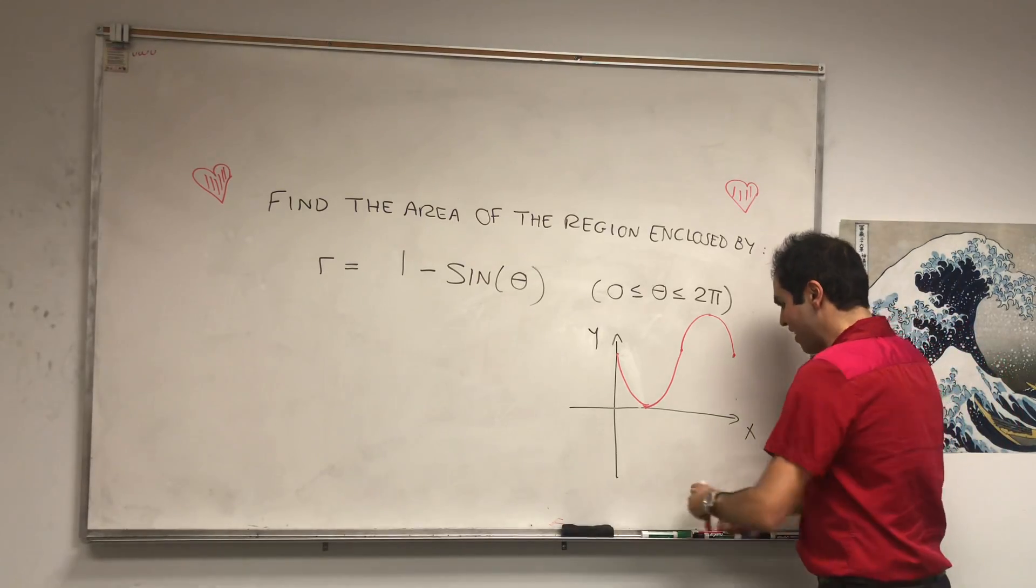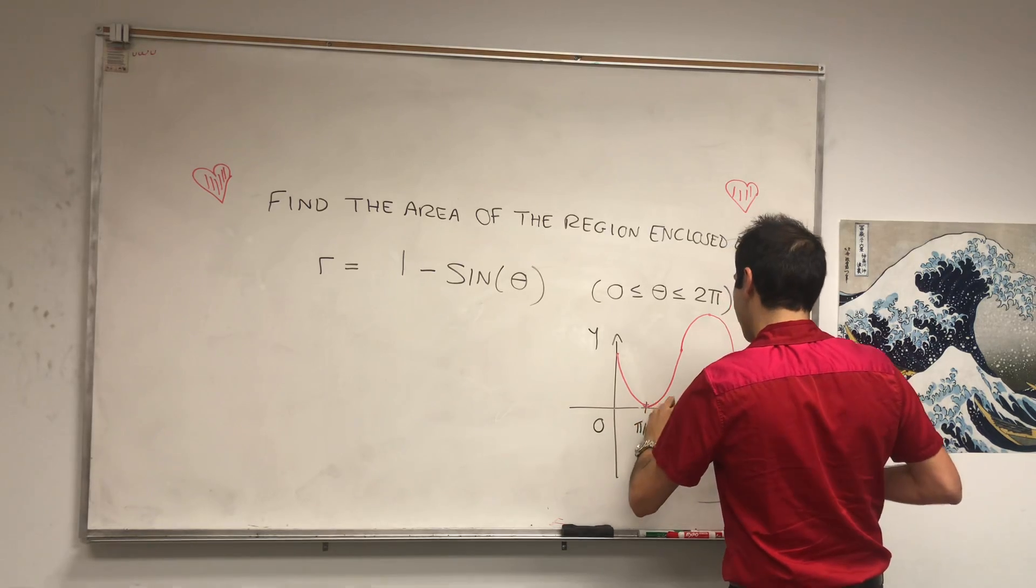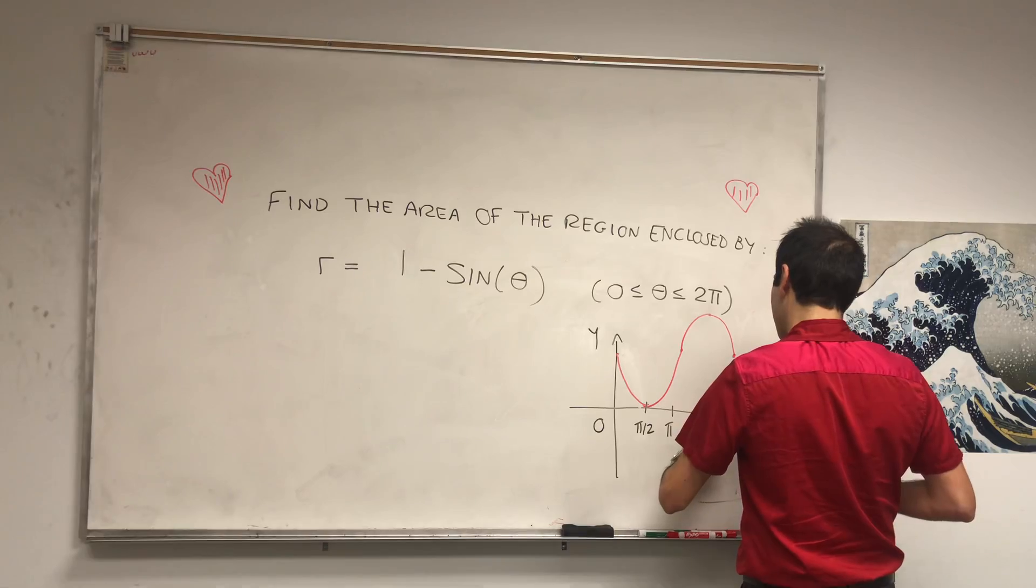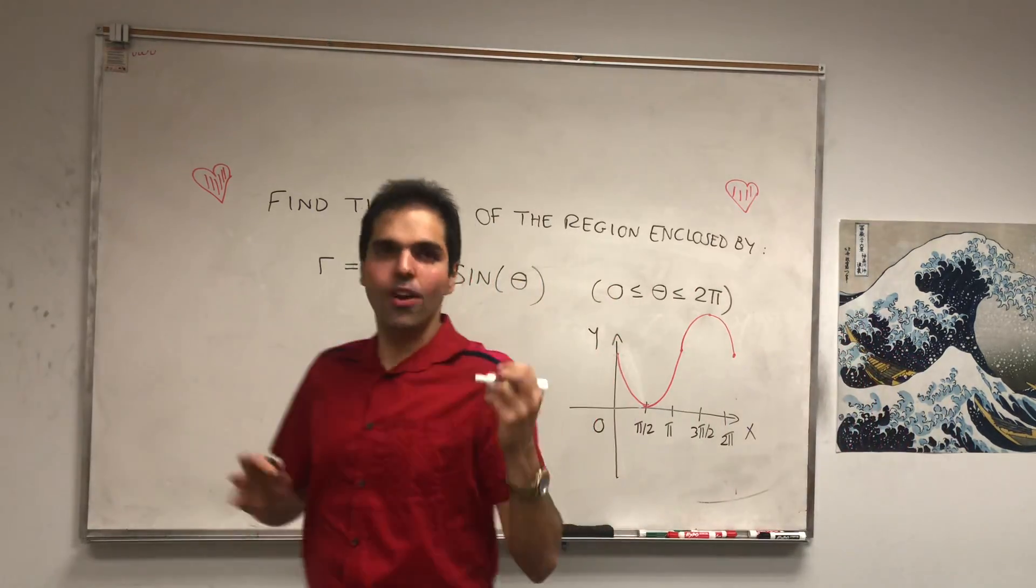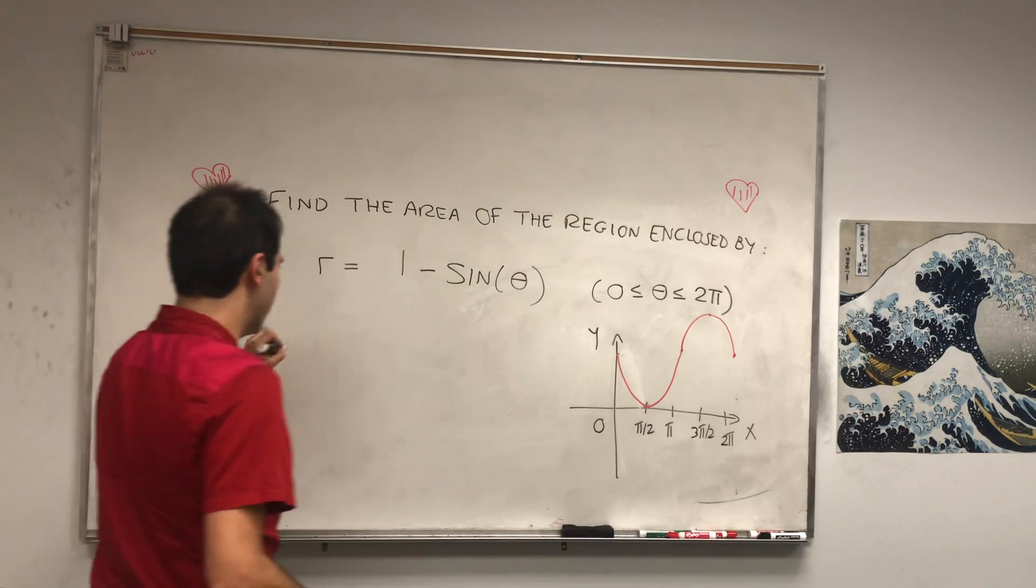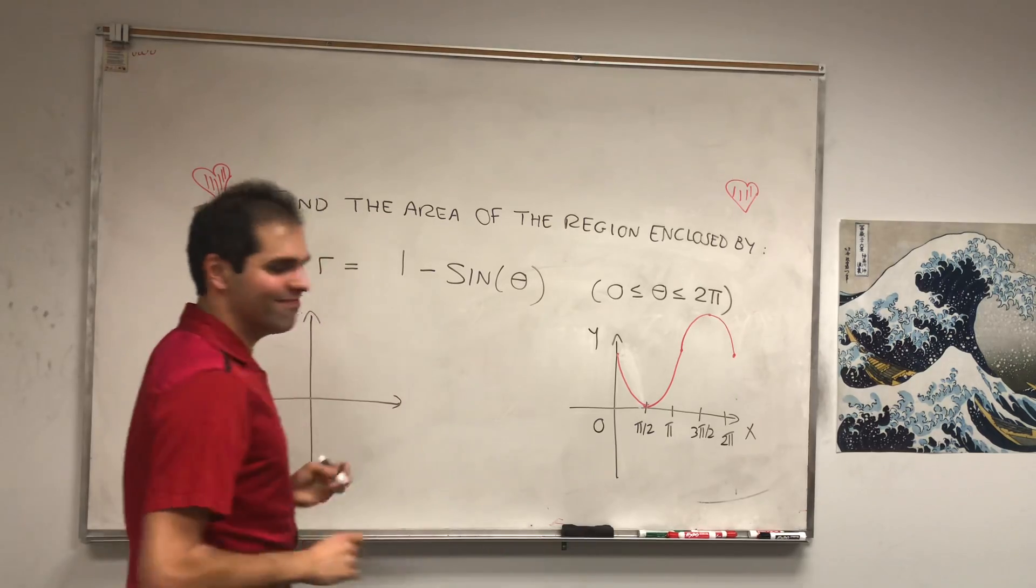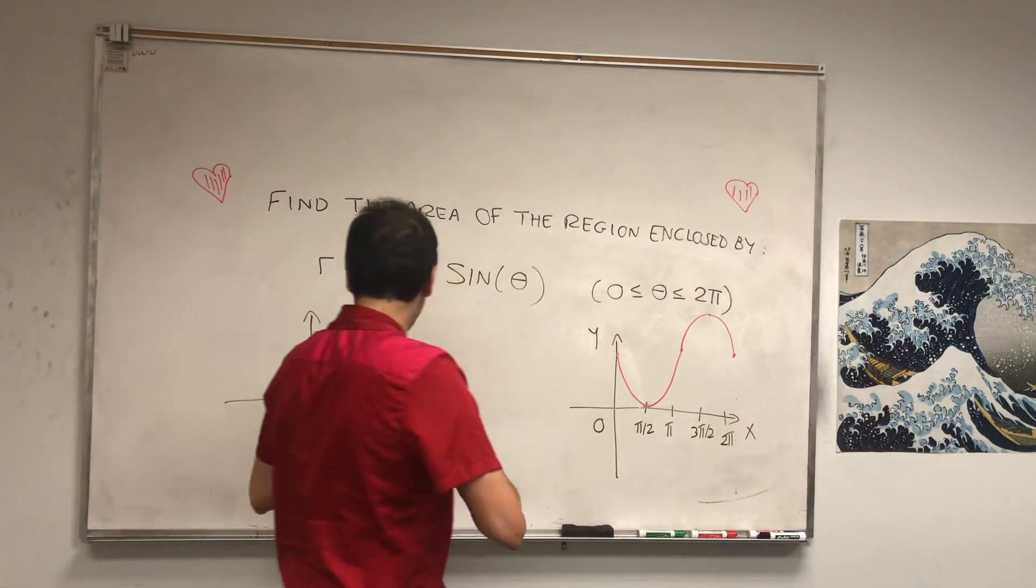Okay, so again, it's 0, pi over 2, pi, and then 3 pi over 2, and then 2 pi. And now let's see what happens to the graph. And you'll see it's very pretty, and you'll see why it has to do with Valentine's Day.